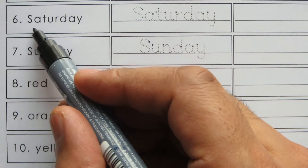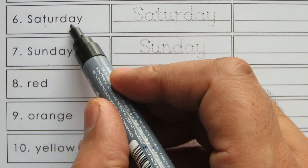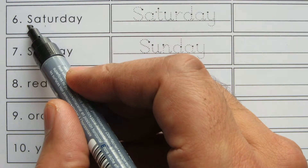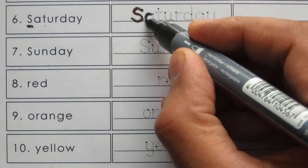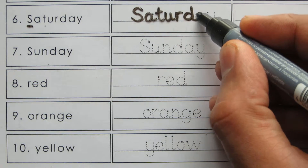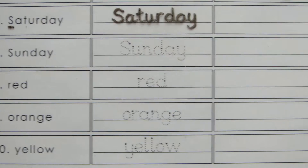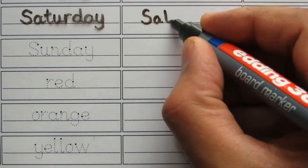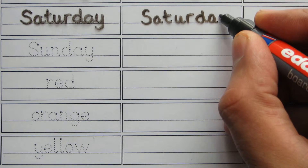The sixth word on this sheet is Saturday. S-A-T-U-R-D-A-Y. Capital S, because it's a proper noun. So let's start: S-A-T-U-R-D-A-Y, Saturday. On to the next box. Saturday, S-A-T-U-R-D-A-Y, Saturday.